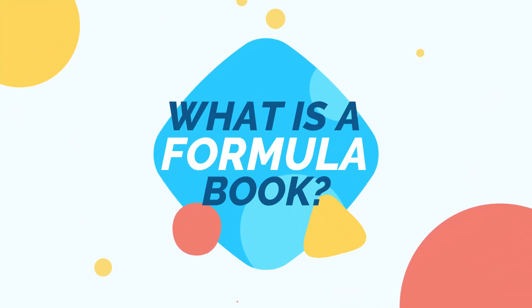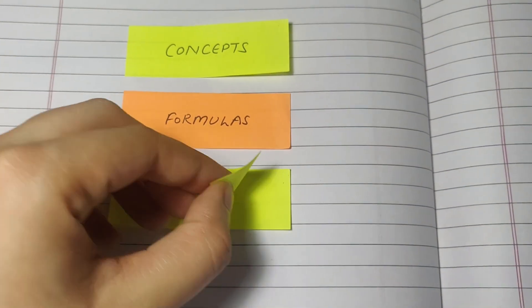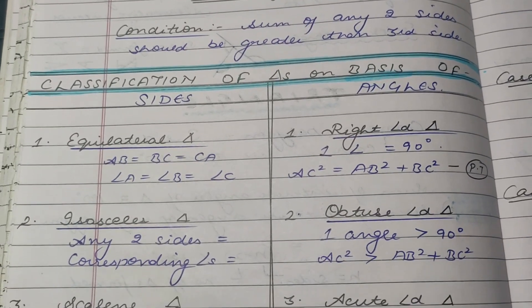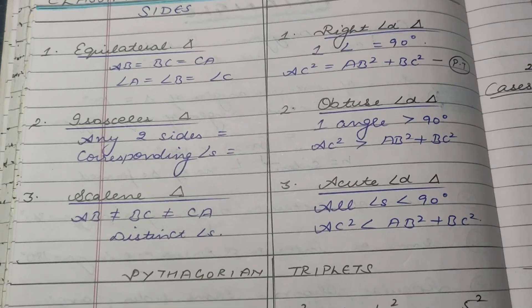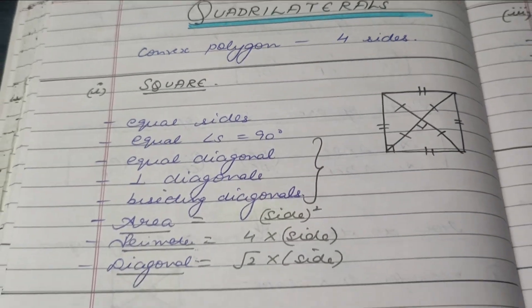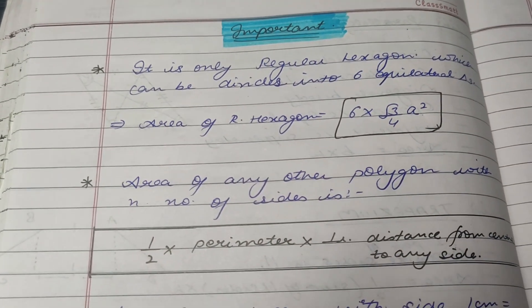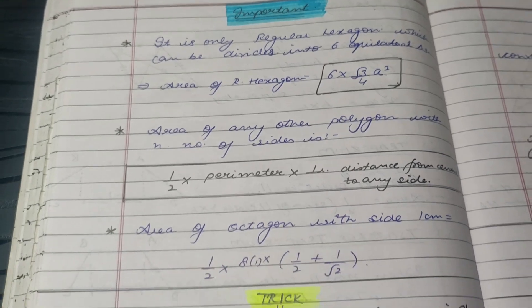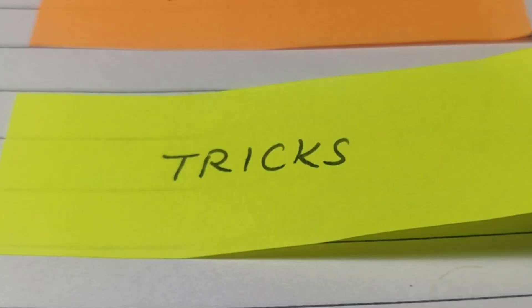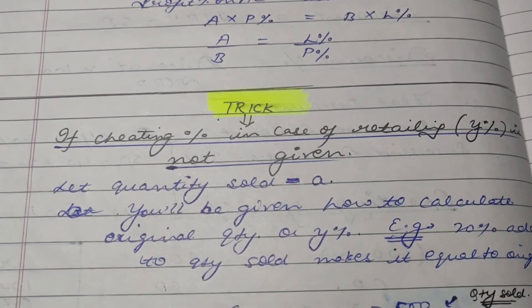So what is a formula book? Essentially it is something that is going to save you time because you don't have to revise your entire syllabus. It contains three important things: concepts, formulas, and tricks. Concepts basically mean knowledge that you need to be able to solve a particular question — for example, geometry, where you have triangles and different properties and figures that you need to be aware of. Formulas are self-explanatory — anything found in core concepts that can be used directly or indirectly in a question. Tricks are the most important component: any shortcut that helps you solve the question in a quicker manner.